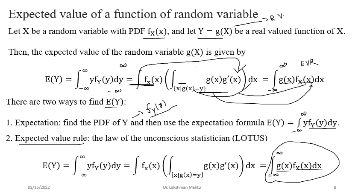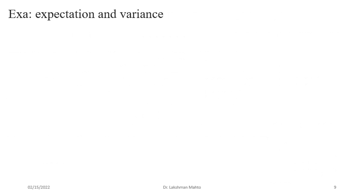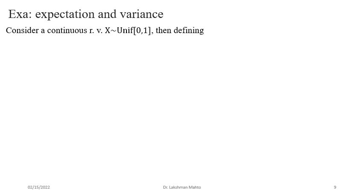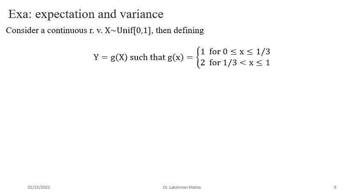Consider a continuous random variable X uniformly distributed on [0,1], and define g(X) as: g(X) = 1 if X is in [0, 1/3], and g(X) = 2 if X is in [1/3, 1]. We need to find E[Y] where Y = g(X).